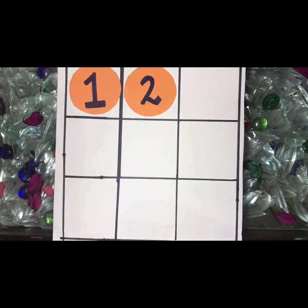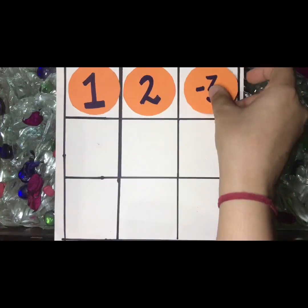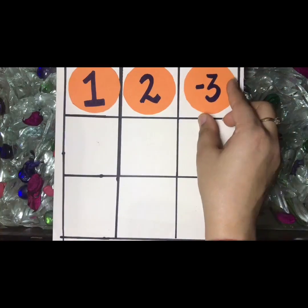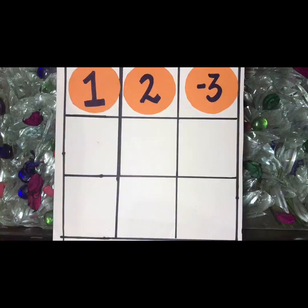So to complete this I need minus 3. So now 3 minus 3, the answer is 0. So the answer of the row becomes 0.